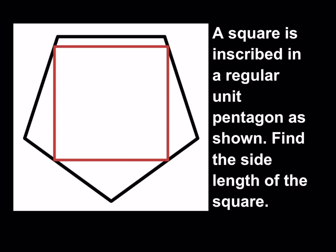This is not an ordinary puzzle — it's a golden puzzle, and you'll see why in a little bit. So a square is inscribed in a regular unit pentagon as shown. Find the side length of the square. We do have a unit pentagon; all sides are equal length of one, and all angles are congruent.